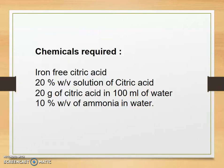For the limit test of iron we require iron-free citric acid, 20% weight by volume solution of citric acid - that's 20 milligrams citric acid in 100 ml of water. Then that becomes 20% weight by volume solution of citric acid. We also require 10% weight by volume solution of ammonia in water, that means 10 ml in 90 ml of water to produce 100 ml.